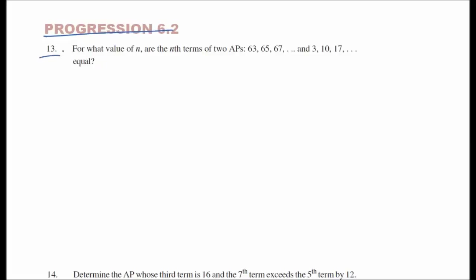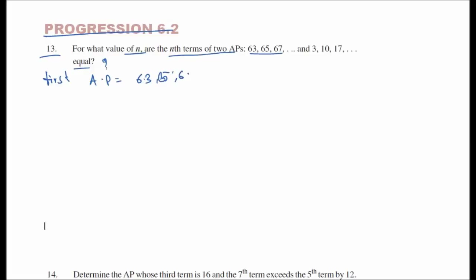Question 13: The nth terms of two APs are equal. The first AP is 63, 65, 67... so a is equal to 63 and d is equal to 2.